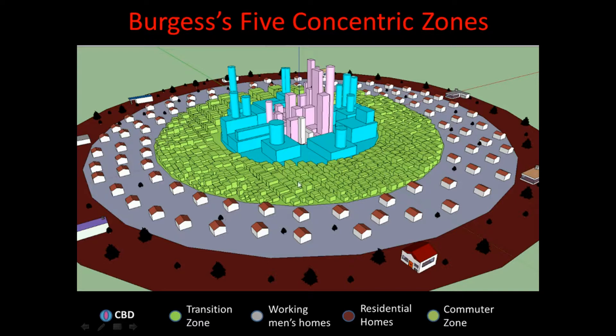The factors that cause high crime in transition zones are high poverty, rapid population growth, heterogeneity — meaning people of different backgrounds, cultures, and races living there — and transiency, which is the rapid influx and outflux of people living there. The combination of all these factors causes instability in their social institutions, thus causing social disorganization.